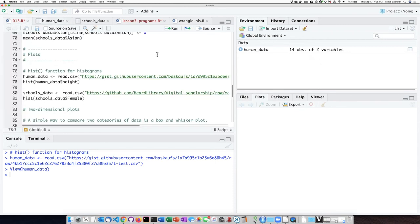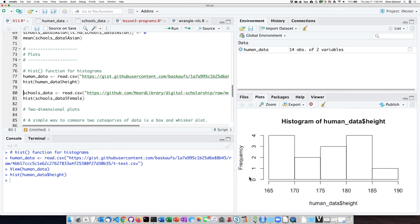If we perform the histogram function on it, we see that it creates a histogram of the human heights. It's not a very smooth distribution because there's only 14 points in it.